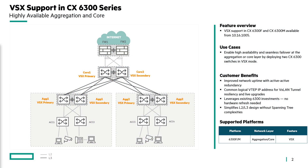VSX is supported on the CX 6300F and 6300M models. The feature enables two independent switches to deliver an active-active data plane at the aggregation or core. Uplinks are split across peers, and downstream devices connect using multi-chassis LAG. With anycast gateway, hosts forward locally rather than through suboptimal routing. For VXLAN, you can deploy a redundant VTEP pair for tunnel resiliency.